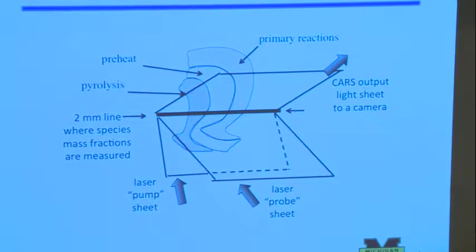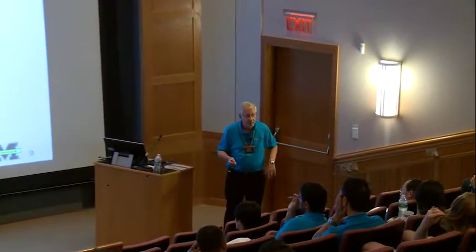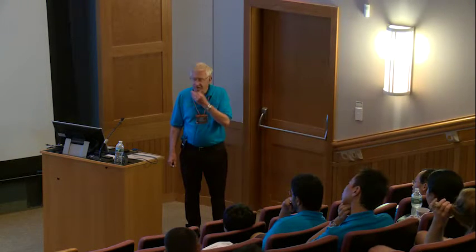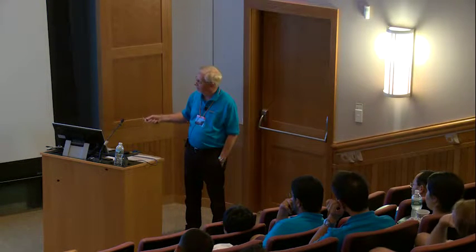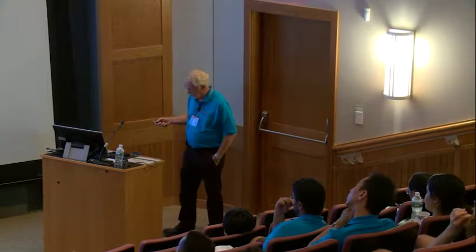The beauty of CARS is you get coherent light out - a sheet in some direction proportional to species concentration. With this method you can get species but not temperature - that needs something more complicated. Jim Gord and Terry Meyer can get temperature as well.